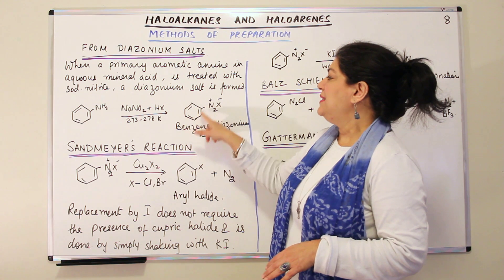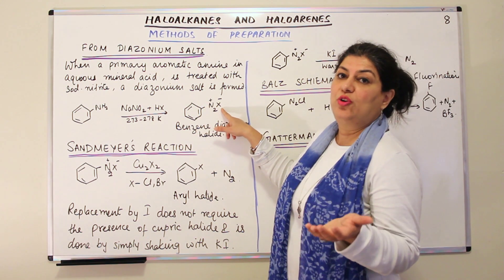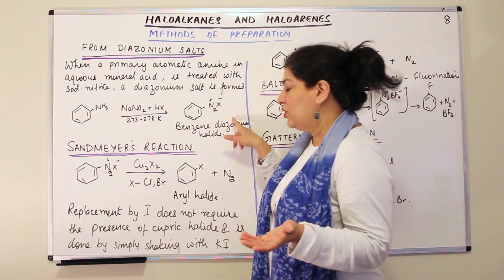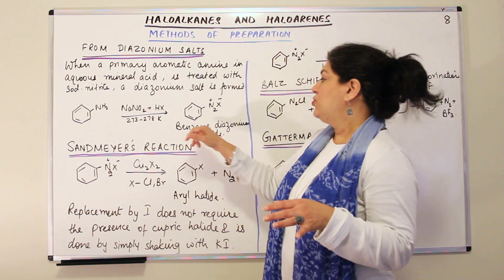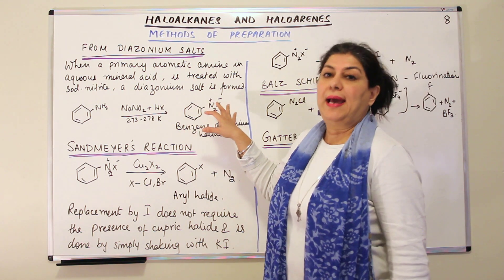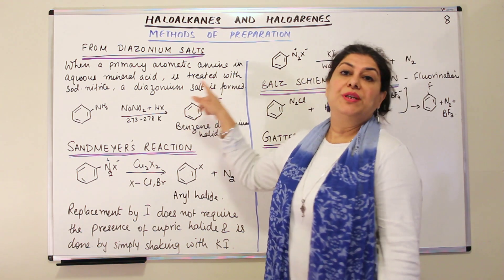And here, this would be a benzene diazonium. If X is chlorine, it would be benzene diazonium chloride, benzene diazonium bromide. So it is a benzene diazonium halide. And this is a diazonium salt.